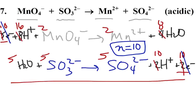We have sixteen hydrogens on the first equation, only ten in the bottom, so we'll cancel out all ten and make this a six. And looking at water: there are five waters on top and eight waters on the bottom. We'll take out those eight, and we'll leave ourselves with three.